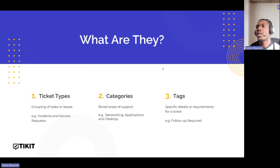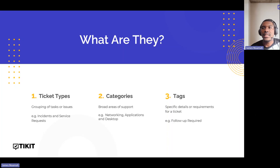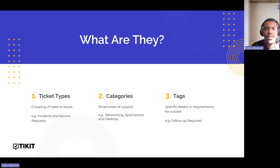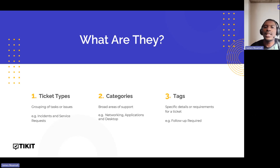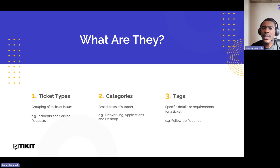So, what are ticket types? They're a way for you to see tickets that come in and group them according to their nature. Two of the big ones are incidents and service requests. If a ticket is a break-fix type of deal, group it as an incident. If they're asking for something — access or a resource — group it as a service request. Different teams handle different types of issues, so it's really good to separate the two.